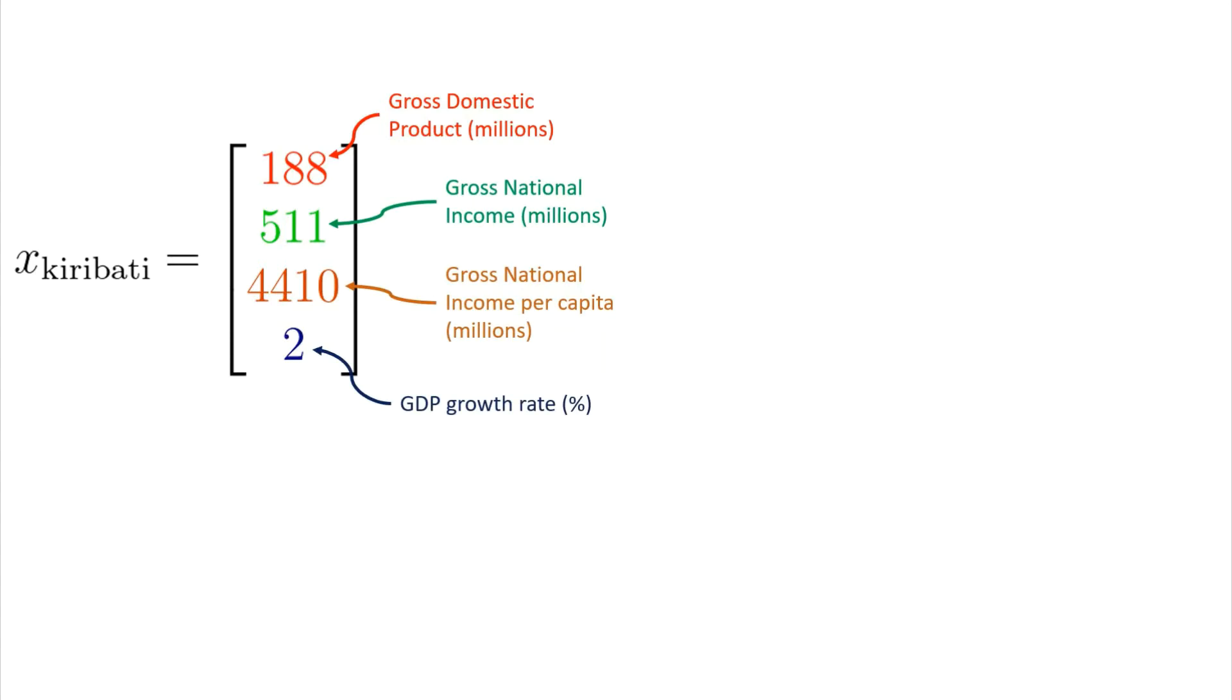We define every input as a feature vector x where each element represents different pieces of information. The example here is for Kiribati. The first element gives the gross domestic product, the second the gross national income, and so forth. We could, of course, select more features, but we shall restrict ourselves to four for this example.